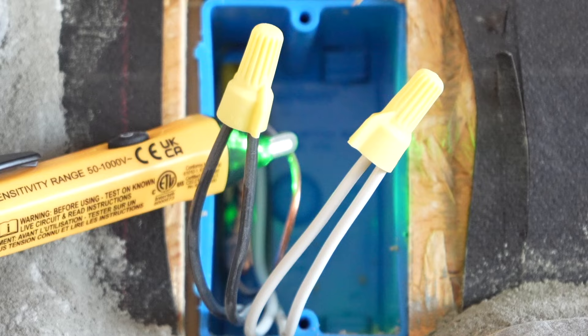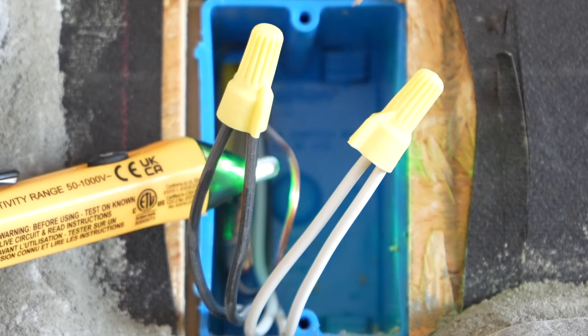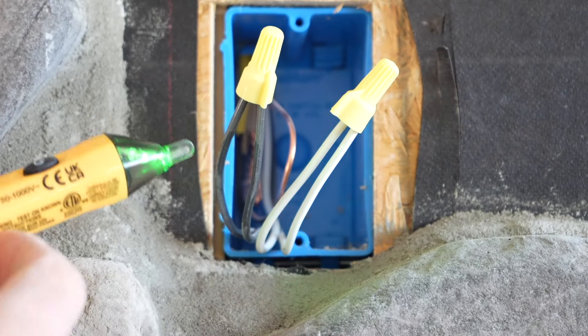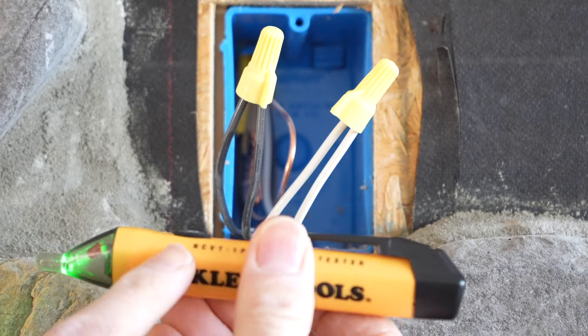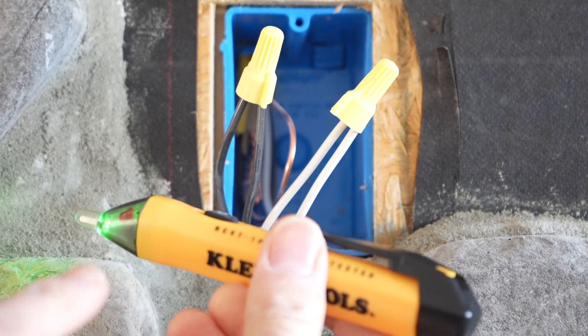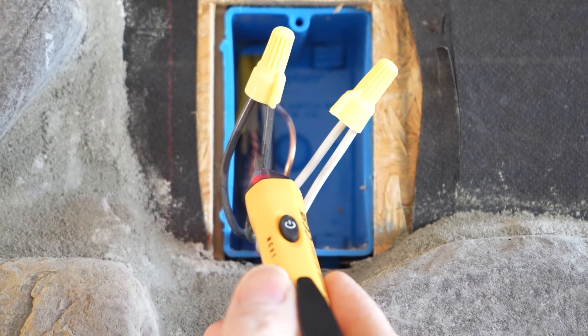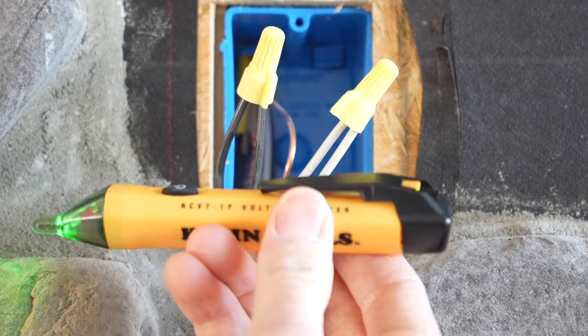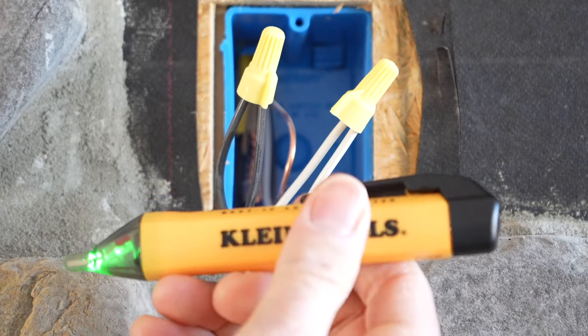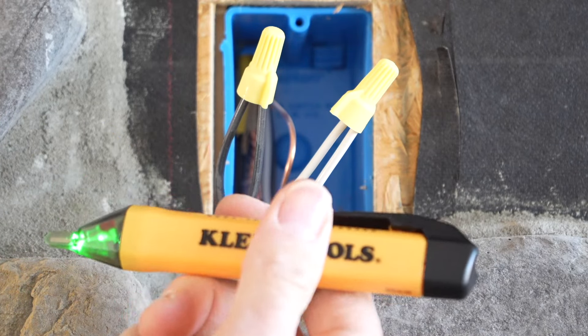That's because this does not detect the power or anything that's in the neutral wire. So you're going to want to make sure when you're testing out an outlet or a circuit that you're testing it up against the black wire. And if we touch the ground wire, it's not going to detect anything there as well.